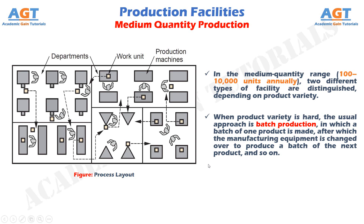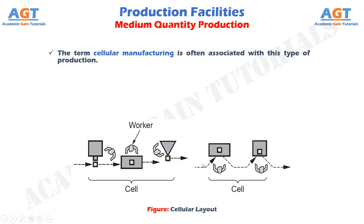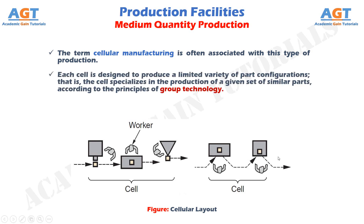An alternative approach to medium-range production is possible if product variety is soft. In this case, extensive changeovers between one product style and the next may not be necessary. It is often possible to configure the manufacturing system so that groups of similar products can be made on the same equipment without significant lost time due to setup. The processing or assembly of different parts or products is accomplished in cells consisting of several work stations or machines. The term cellular manufacturing is often associated with this type of production. Each cell is designed to produce a limited variety of part configurations, specializing in a given set of similar parts according to the principles of group technology. The layout is called a cellular layout, depicted in this figure.